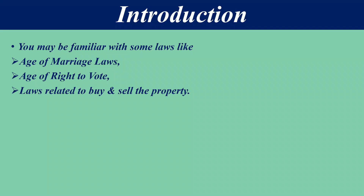Second is the age of right to vote. We are all citizens of India, and everyone has the right to vote without any discrimination. But an age limit has been given — 18 and above. A person can have the right to vote. We also have laws related to buying and selling property. Our society has different types of laws, and we have come to know about these things.